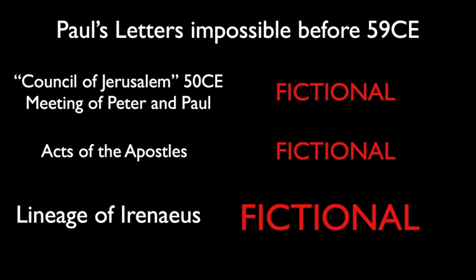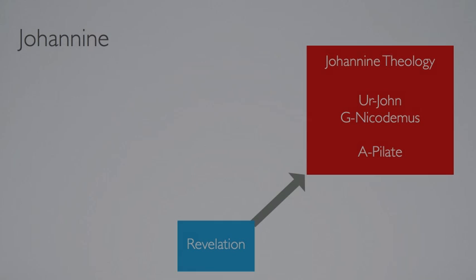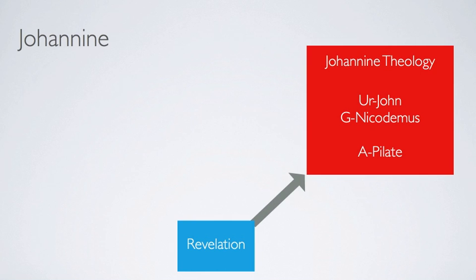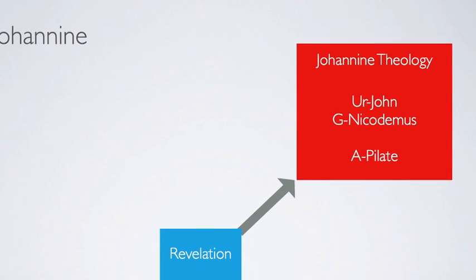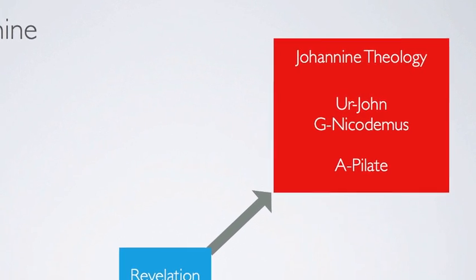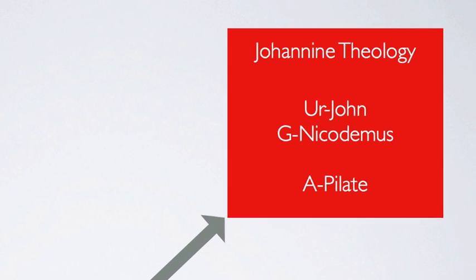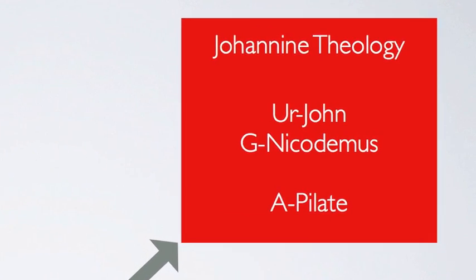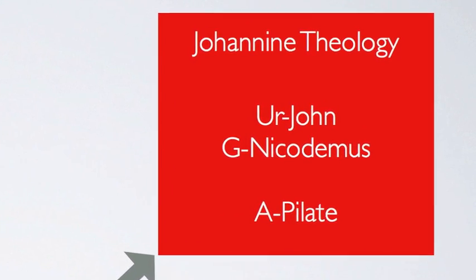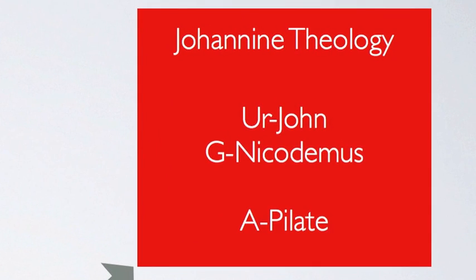The first theology of Christianity appears to be Johannan. This would include much of the Gospel of John and the Gospel of Nicodemus. This would also include the bulk of the text of the Acts of Pilate. The date that this theology came into existence is unknown, but ranges between 70 and 100 CE.